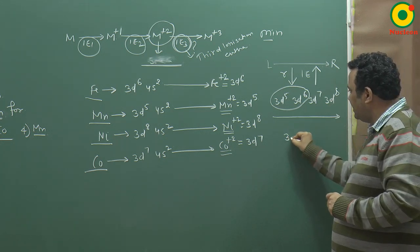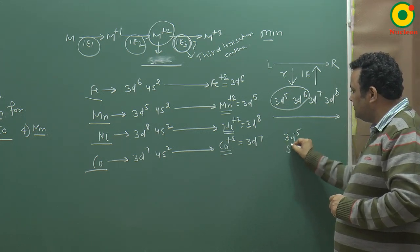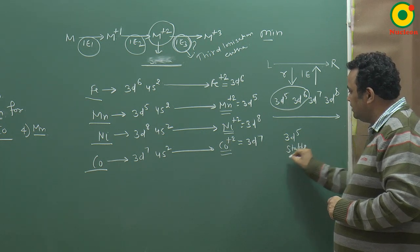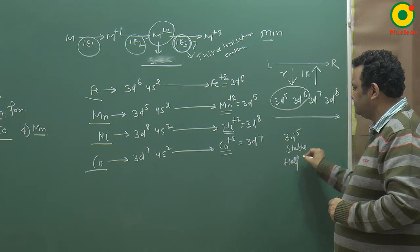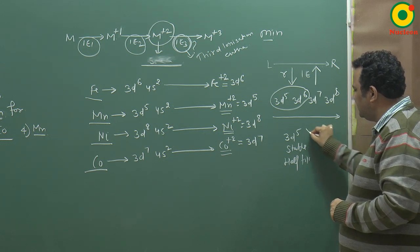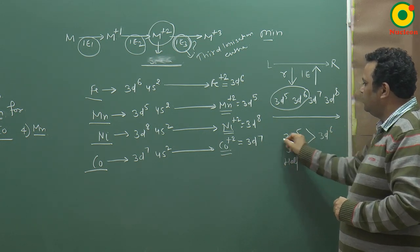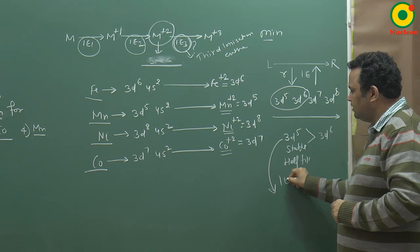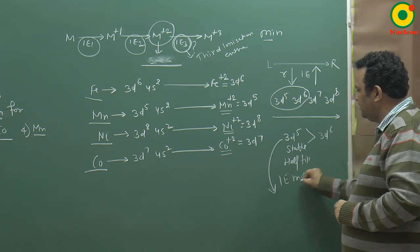But 3d5 is stable because it is half filled. And if this is half filled, so 3d6 will be less stable. So IE will be more for 3d6.